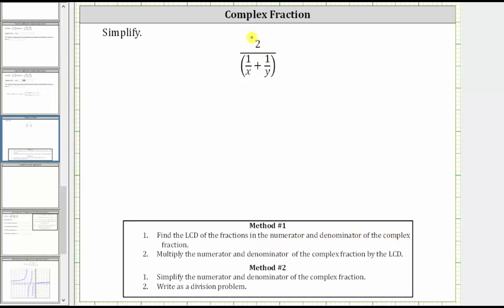The numerator of the complex fraction is just two, and therefore the denominator would just be one. But looking at the fractions in the denominator of the complex fraction, notice how we have a denominator of x and y, and therefore the least common denominator is going to be x times y, or xy.